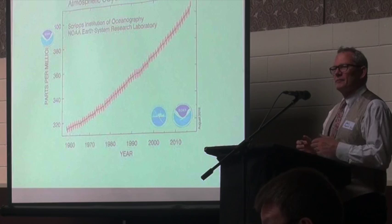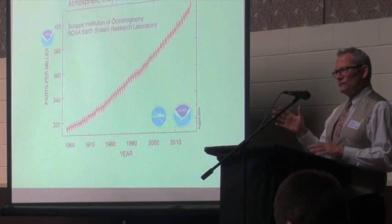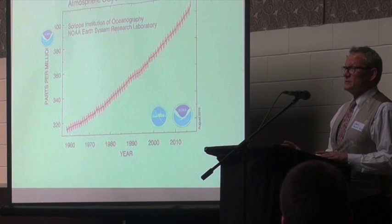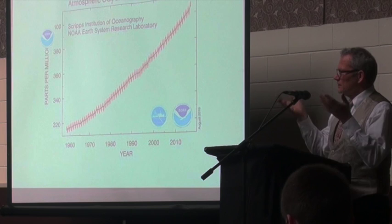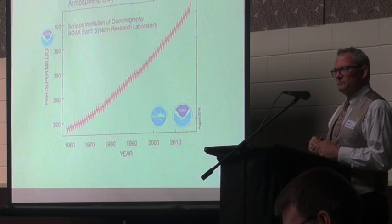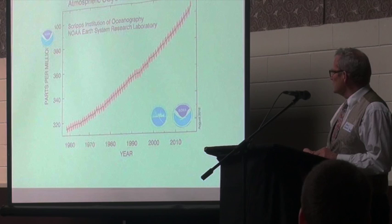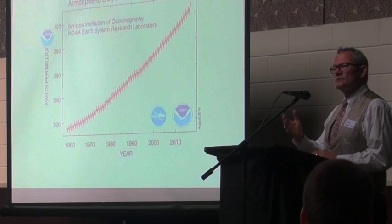Why do we talk about carbon dioxide? There are only two ways you can change the climate: you can make the sun brighter or dimmer, or you can change the amount of greenhouse gases — carbon dioxide and others — in the atmosphere. These are the gases that absorb the heat the Earth sends up to space. Without them, the Earth's surface temperature would be around 30 degrees lower and life really wouldn't be possible. Carbon dioxide is the gas that stays in the atmosphere the longest — hundreds to thousands of years — so it's very important to keep track of.